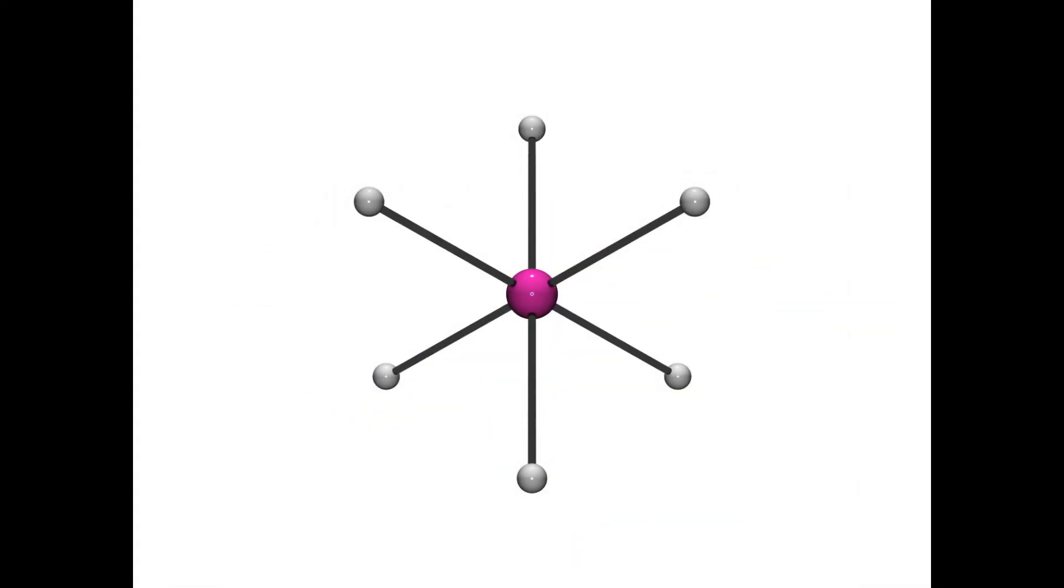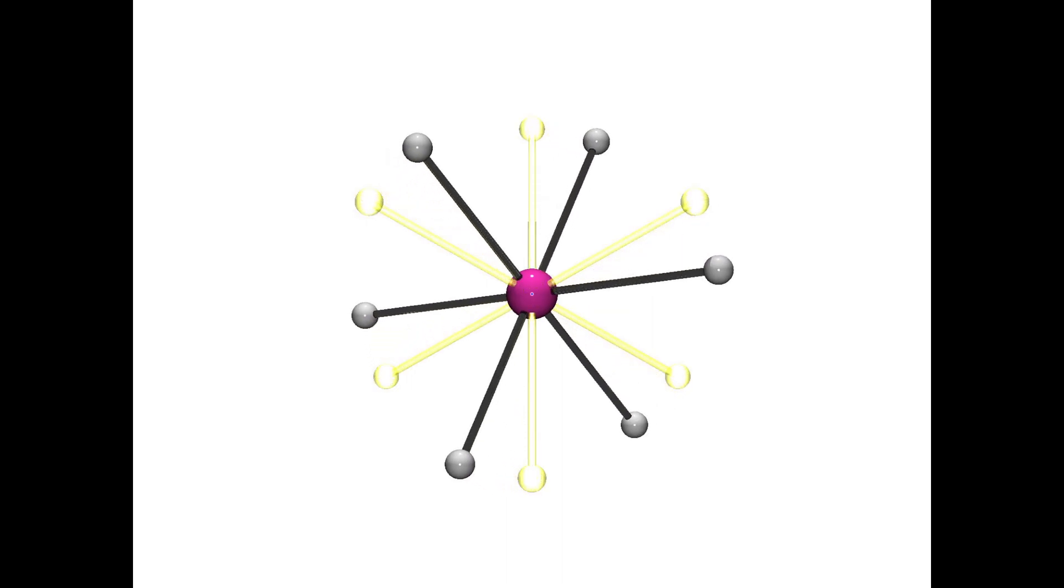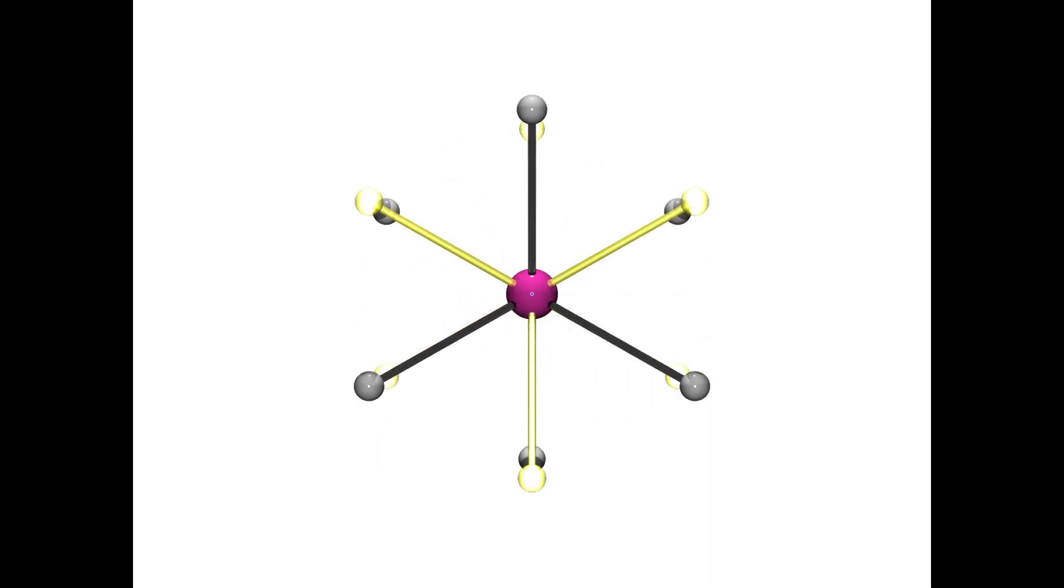There is one last set of symmetry elements to find, and those are the S6 improper rotations. There are eight of them, collinear with the C3 axes. Here we're looking straight down the molecule sitting on a tabletop, and I'm going to demonstrate one of the S6 improper rotations, but leave a ghost behind in yellow, so you can keep track of the position it previously occupied. First we'll rotate the molecule by 60 degrees, and then we'll place the mirror plane perpendicular to that rotation.